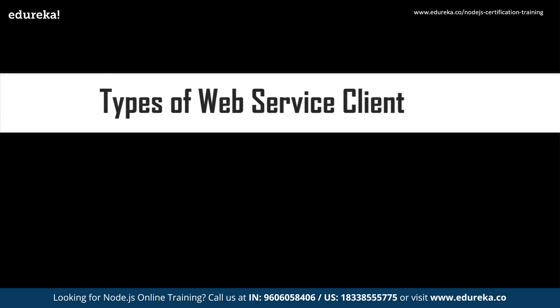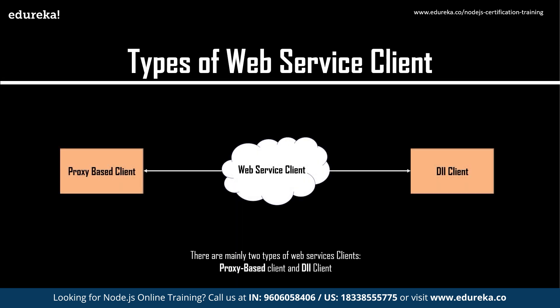Moving to the last topic: types of web service clients. There are two types. The first is the proxy-based client, where the web service client generates stubs or proxies on the client side to invoke web services. A stub acts as a local representative for the remote object and carries out the method called on it. The second is the DII — Dynamic Invocation Interface — client, where the client never creates stubs or proxies; instead, the API provider supplies the stubs to call the web services.